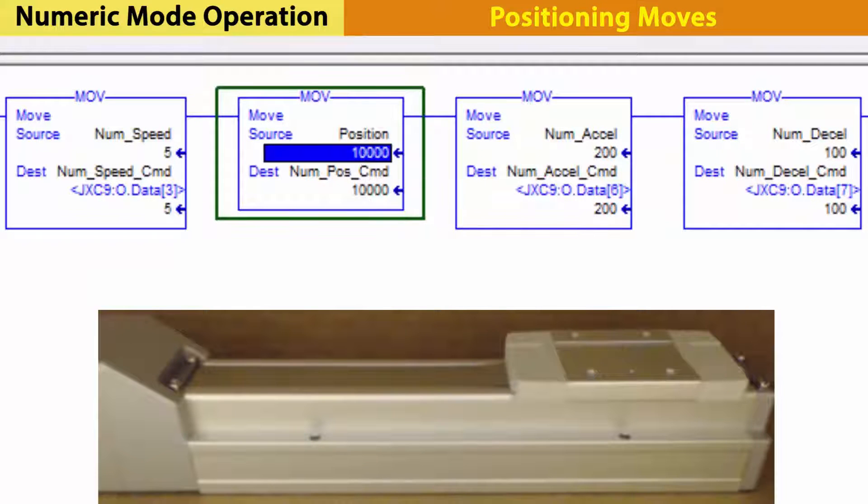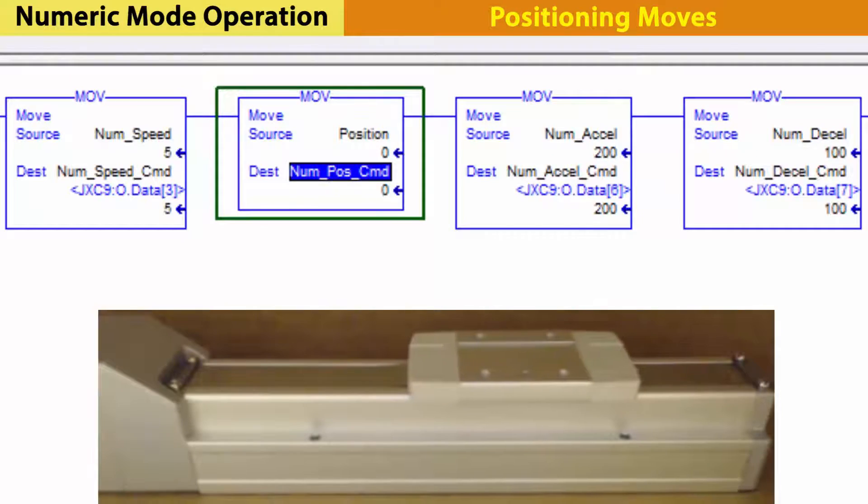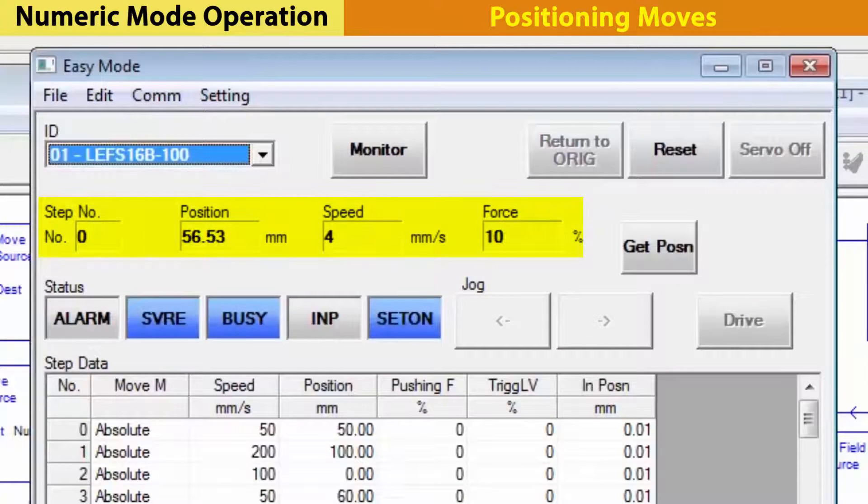Then, return the actuator to position 0. It uses the speed already in the register.